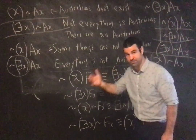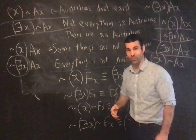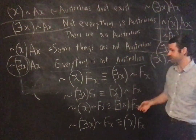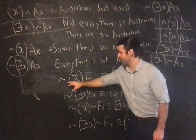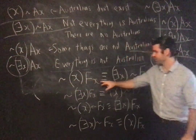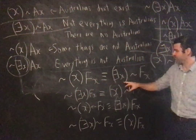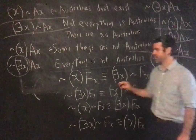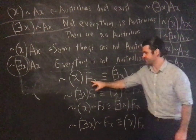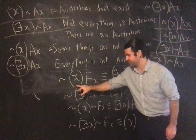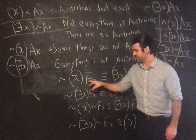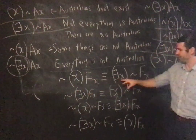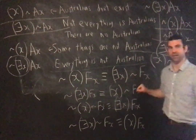In general, whatever this predicate is — and it can be something complex — it's not the case that for all x, fx is equivalent to there exists an x which is not fx. Not everything is f means something is not f. Not the case that for all x, x is f — not everything is f — means there's something which is not f.